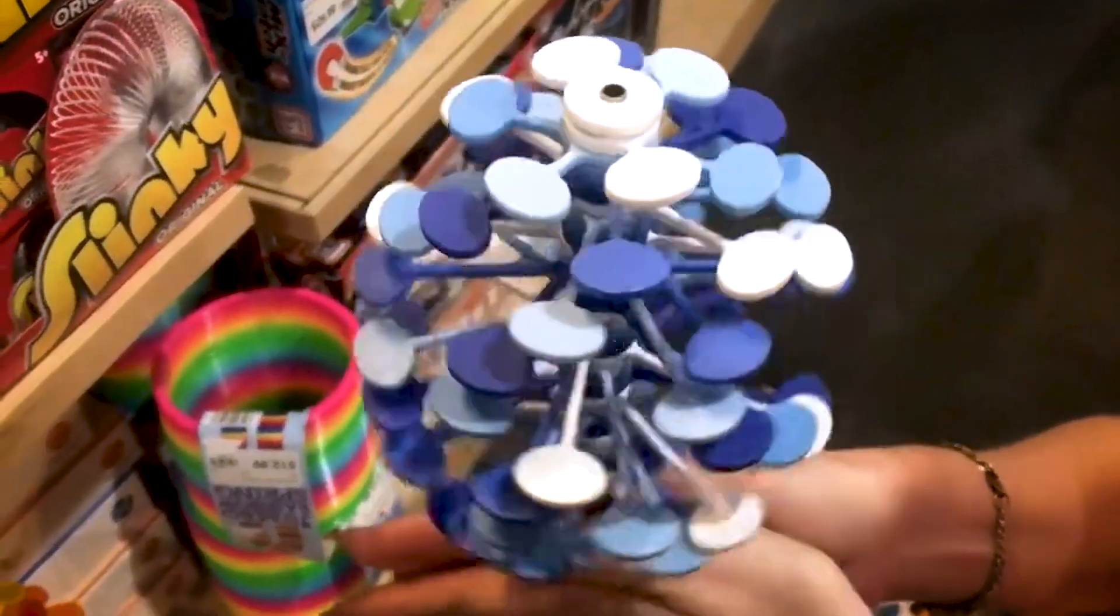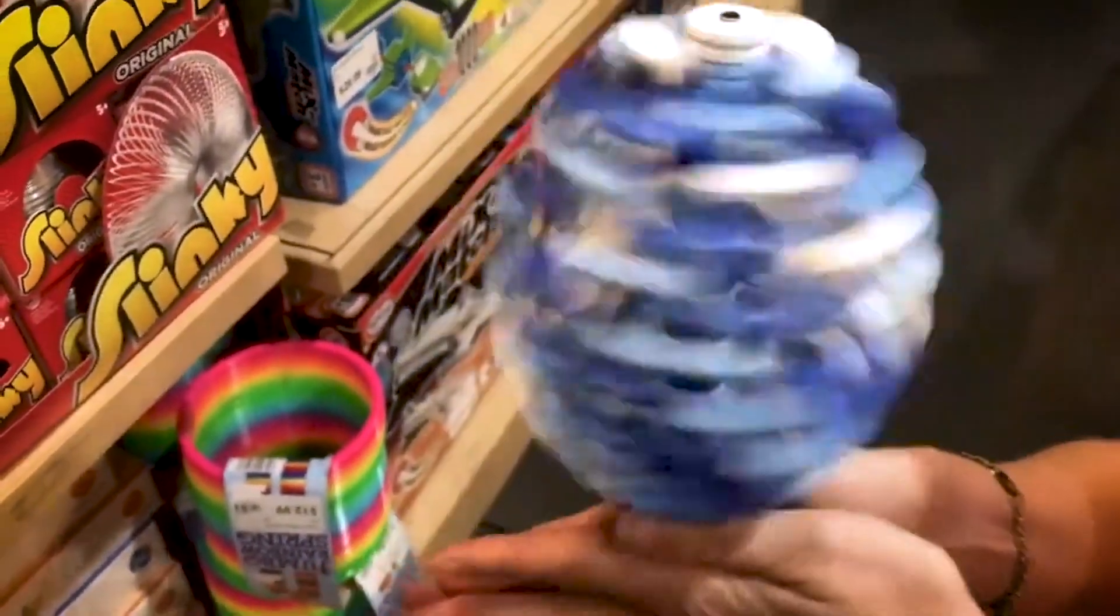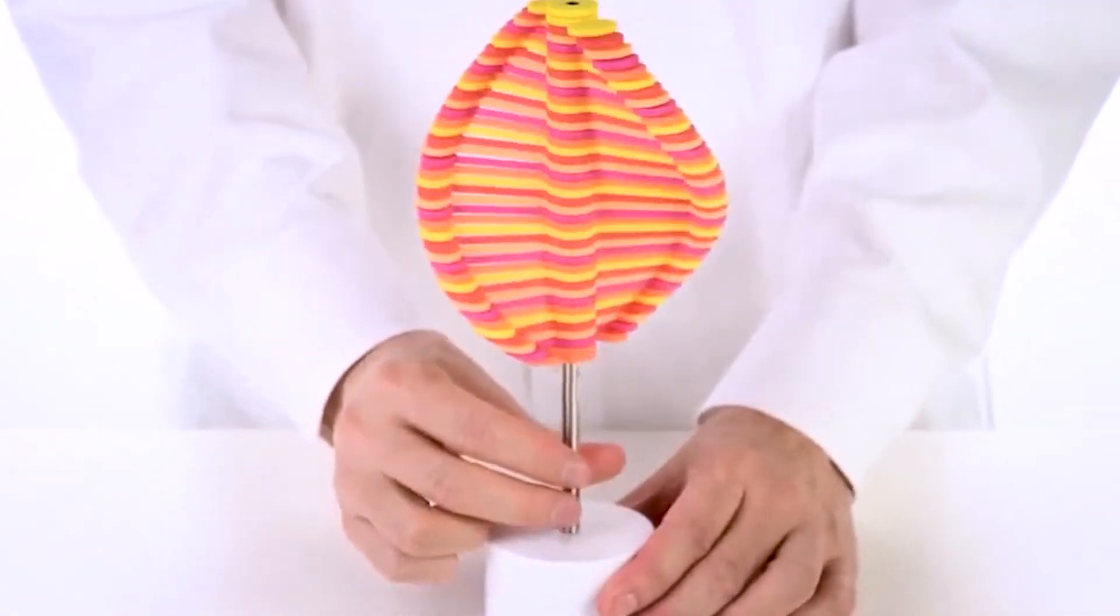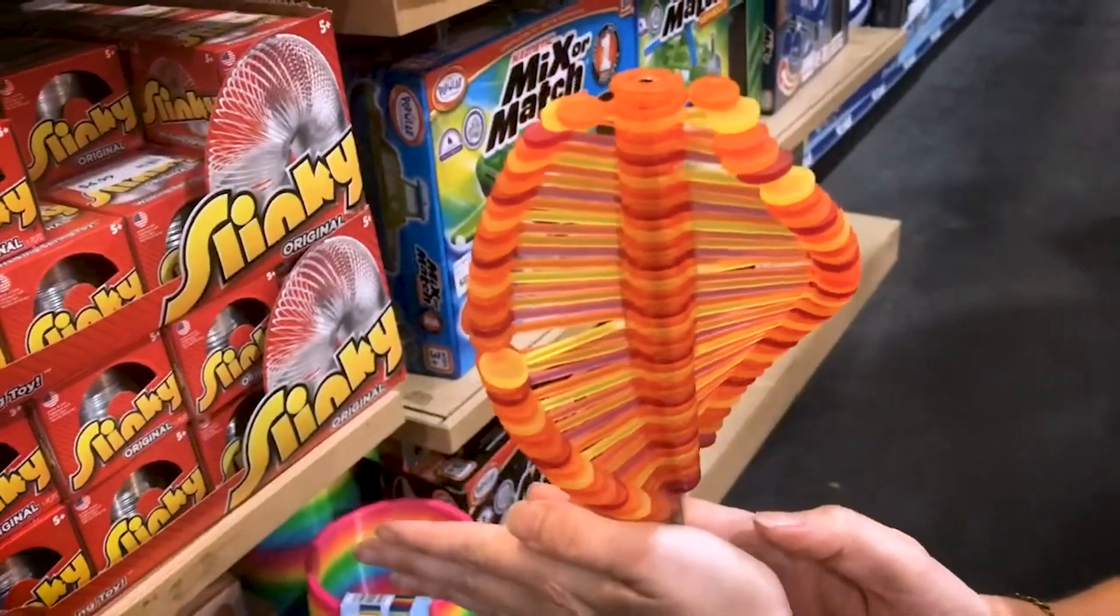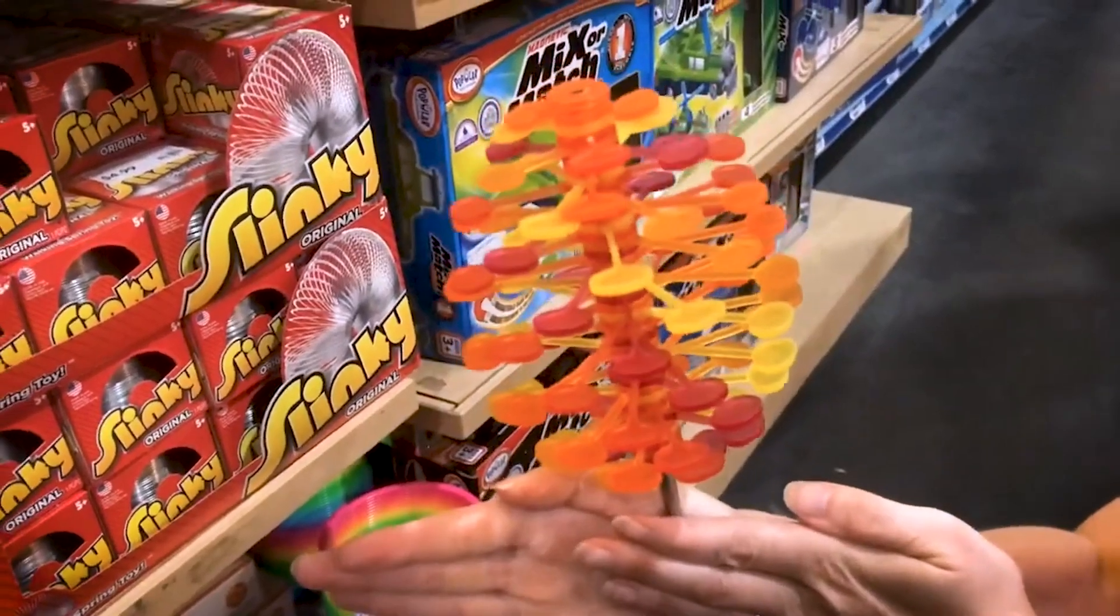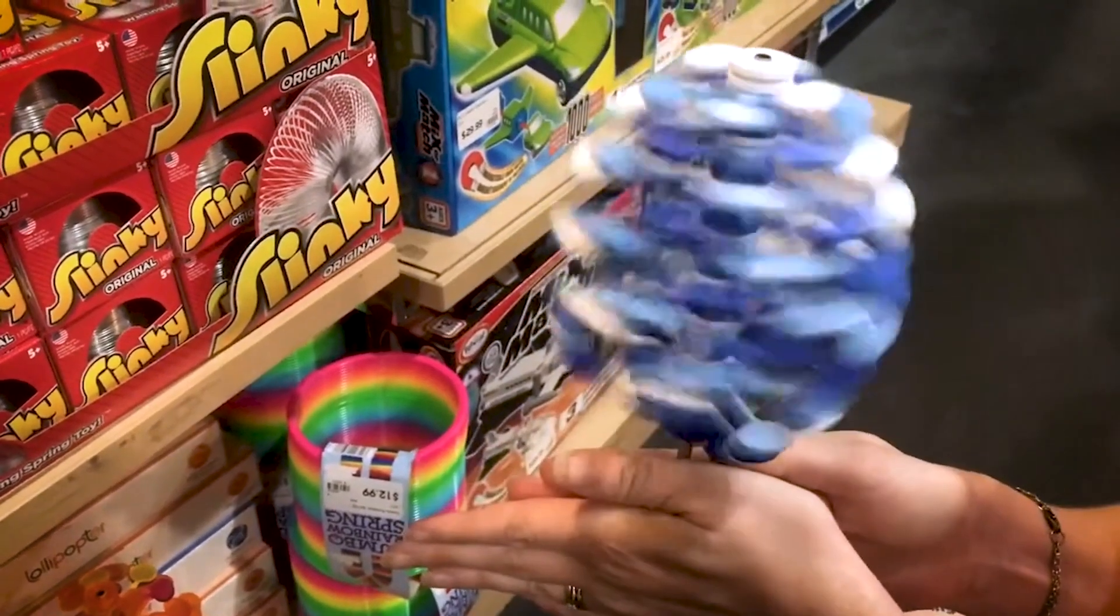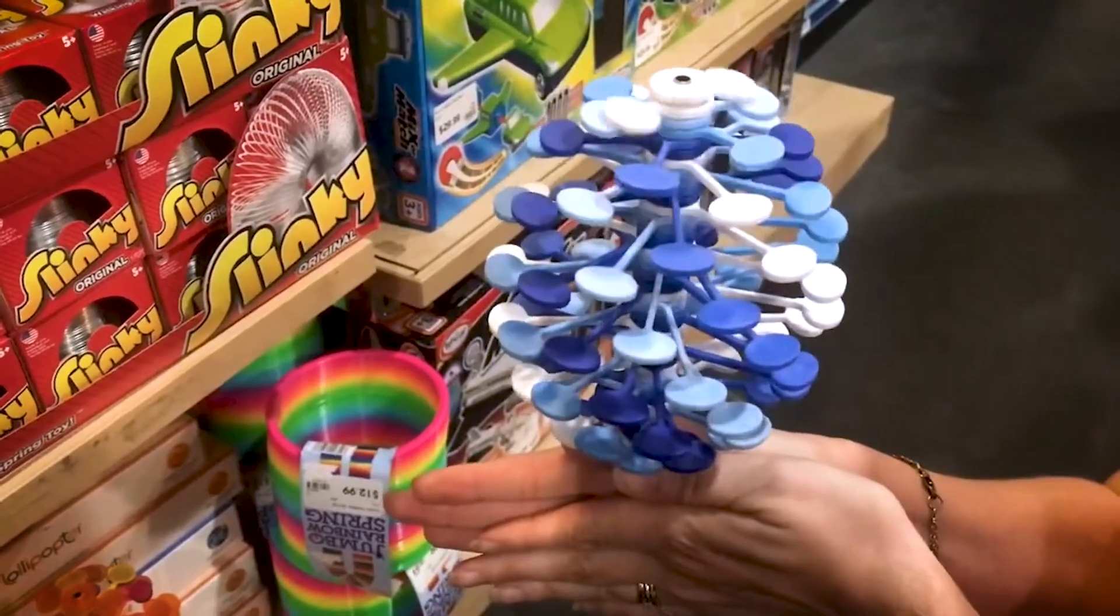With each twist, the lollipopter transforms from a burst of vibrant colors into a spiky ball, capturing the imagination of both young and old. Crafted with meticulous attention to detail, the lollipopter showcases a harmonious blend of artistry and engineering. Its sturdy design ensures smooth and seamless transformations, allowing you to explore the endless possibilities of shape and form. Whether displayed as a decorative piece on a shelf or used as a hands-on fidget toy, the lollipopter brings a sense of whimsy and delight to any space.